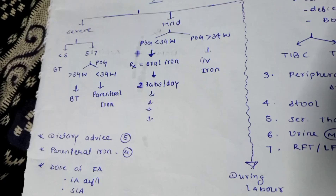In management, there are two parts: for severe patients and for mild patients. If hemoglobin is less than 5%, blood transfusion is done. If hemoglobin is between 5 to 7%, we check the period of gestation — if more than 34 weeks, we go for blood transfusion; if less than 34 weeks, we go for parenteral iron. Hemoglobin between 7 to 11% is categorized as mild to moderate.